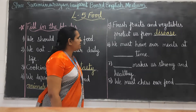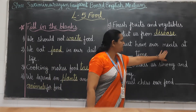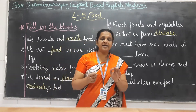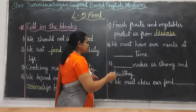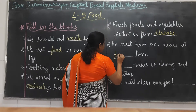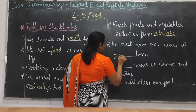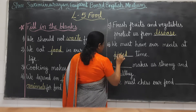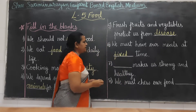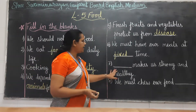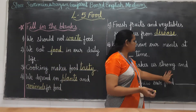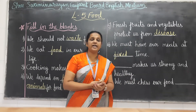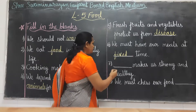We must have our meal at the right time. Exact time pe khana jai — means we must eat at the fixed time. Food makes us strong and healthy. Kaun hame strong and healthy bananda hai? Food.